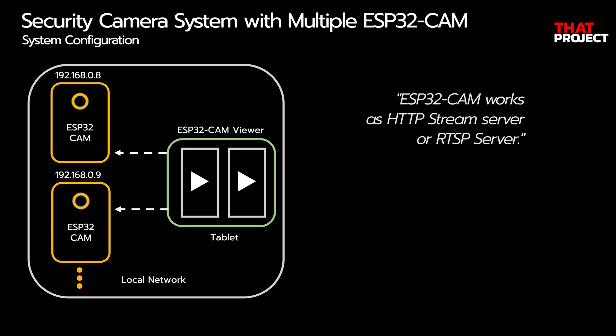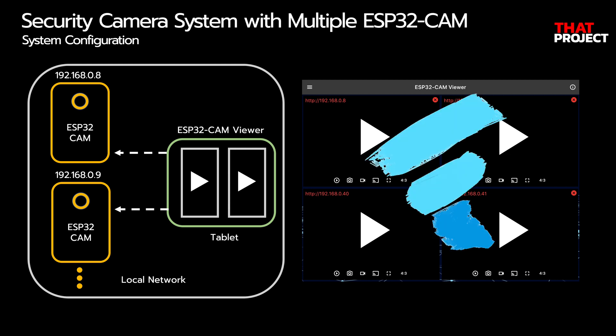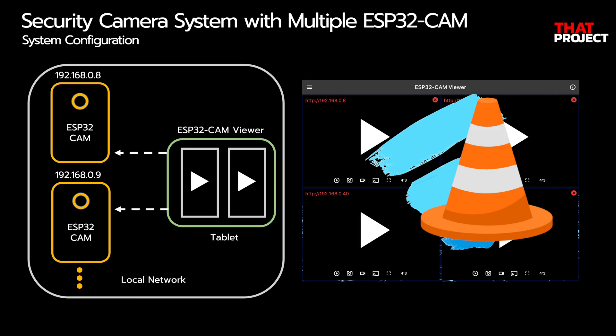First, let's look at the system configuration. ESP32CAM is connected to the local network and works as an HTTP stream server or RTSP server. There are many projects made to act as an RTSP server on ESP32CAM. You can find the source code I used for this project in the video description below. The overall operation method is similar, so please use the one you want. I have created an application that allows you to view multiple connected cameras on a single screen. This app's name is ESP32CAM Viewer, built with Flutter and based on the VLC player library.